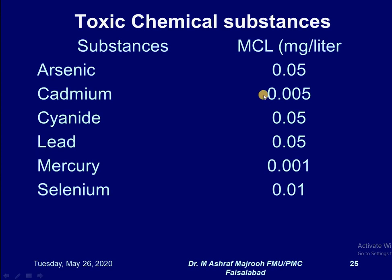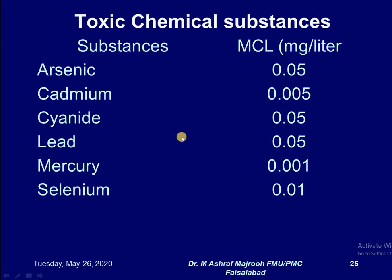Toxic chemical substances, generally heavy metals: national goals are relatively higher than the ideal goals set by WHO. The acceptable limits are: arsenic 0.05 mg per litre, cadmium 0.005 mg per litre, cyanide 0.05 mg per litre, lead 0.05 mg per litre, mercury 0.001 mg per litre, and selenium 0.01 mg per litre. Ideally they must be zero, but these are the maximum contaminant levels required for treating the water as consumable.